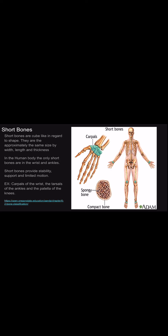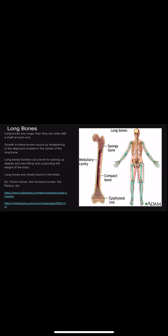Short bones are cube-like in regard to shape. They are approximately the same size in width, length, and thickness. In the human body, the only short bones are found in the wrists and ankles. Short bones provide stability and support with limited motion. Examples of this are the carpals of the wrists, the tarsals of the ankles, and the patella of the knees.